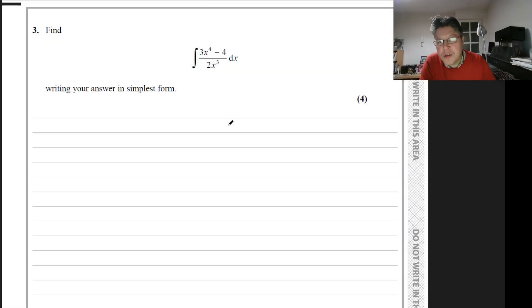In this question we're given an expression: 3x to the 4 minus 4, over 2x cubed, and we need to integrate it. We'll begin by first preparing it for integration, so we have the integral and we'll